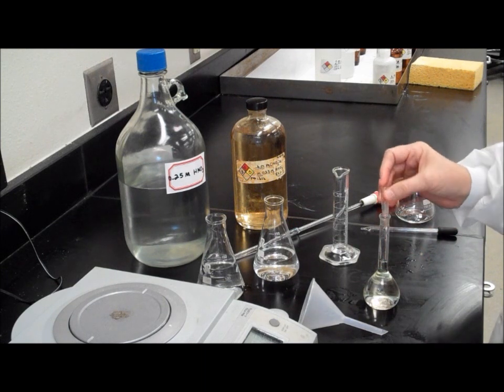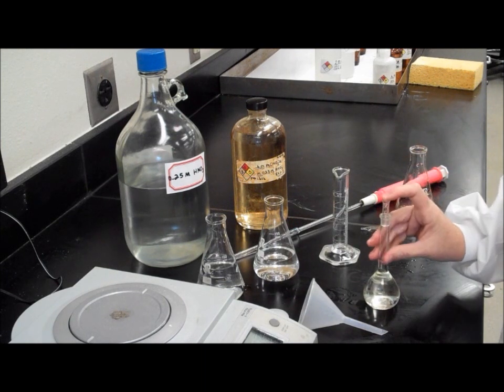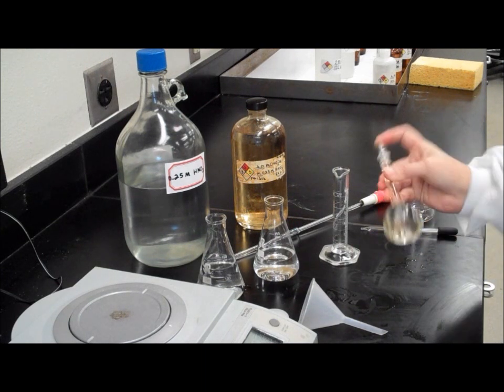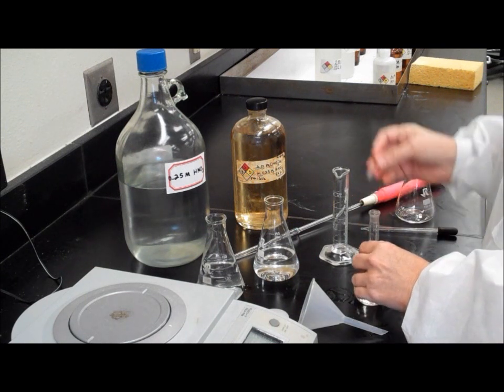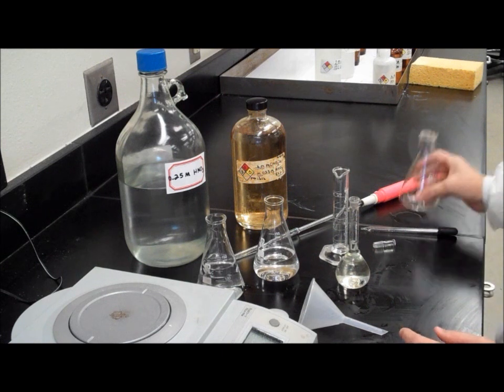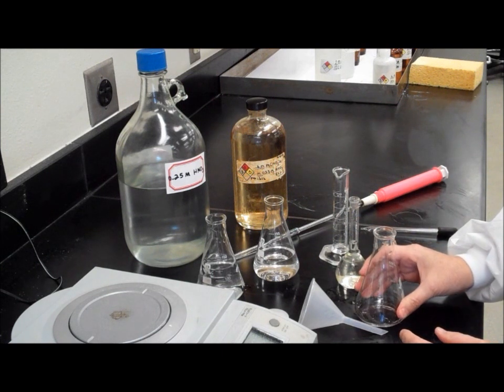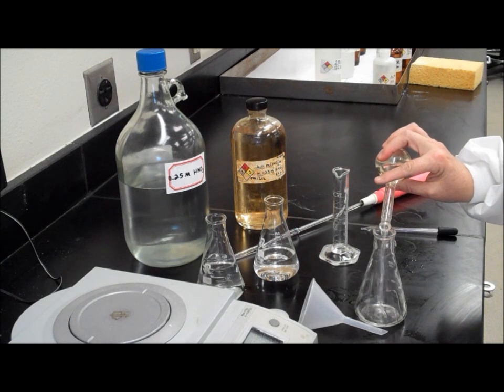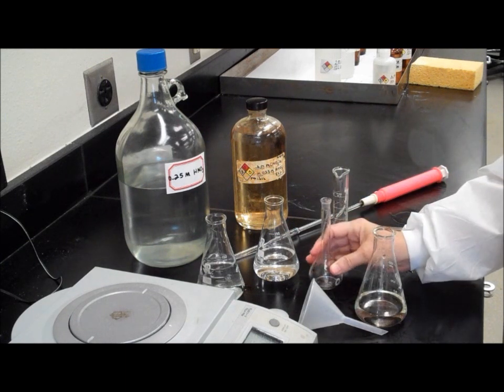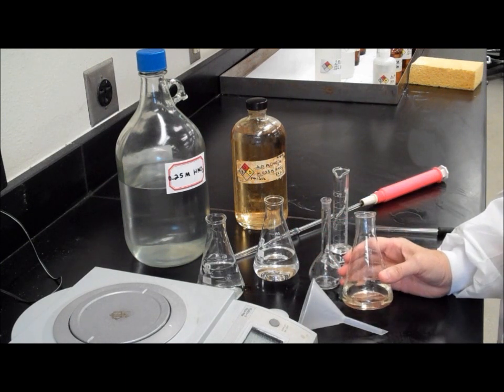Next, place the glass stopper in the top of the volumetric flask and invert once or twice to mix. You can then transfer the solution to an Erlenmeyer flask. Label this flask solution number one.